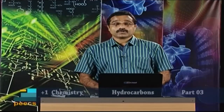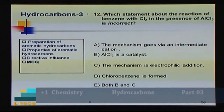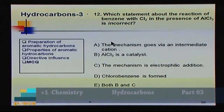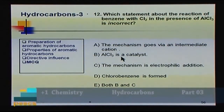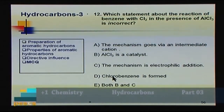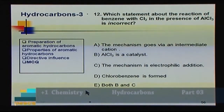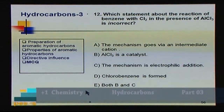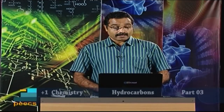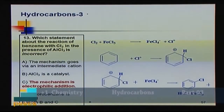Question 12: Which statement about the reaction of benzene with chlorine in the presence of aluminum chloride is incorrect? A) Mechanism goes via an intermediate cation, B) AlCl₃ is a catalyst, C) mechanism is electrophilic addition, D) chlorobenzene is formed, E) both B and C. The reaction is electrophilic substitution, not electrophilic addition. So statement C is incorrect. Answer: C.